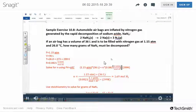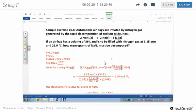In sample exercise 10.8, we're going to look at how to use the ideal gas law and stoichiometry at the same time. In this problem they give you a reaction: 2 NaN₃ → 2 Na + 3 N₂. They also give you some information - if an airbag has a volume, so they give you the volume.